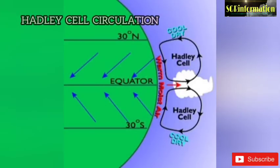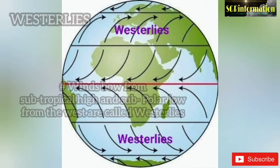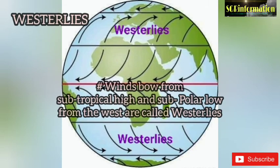Hadley cell circulation: the Hadley cell, named after George Hadley, is composed of moist warm air that rises into the atmosphere above the equator and is the source of warm temperatures and rainfall in the equatorial region.